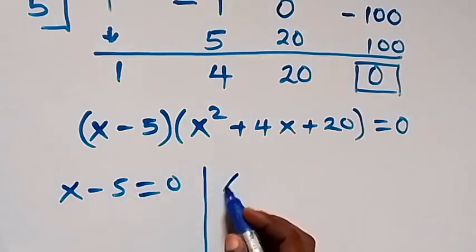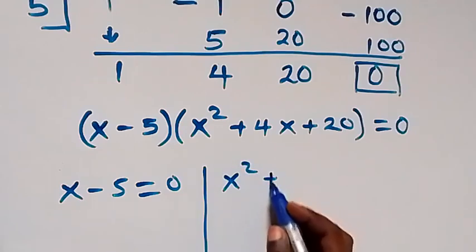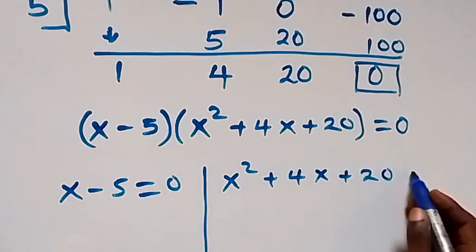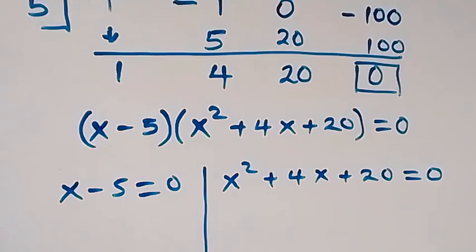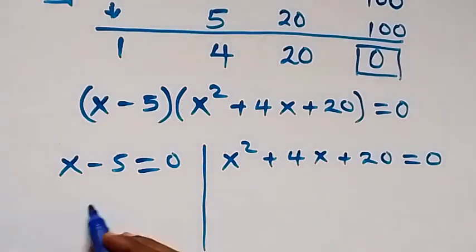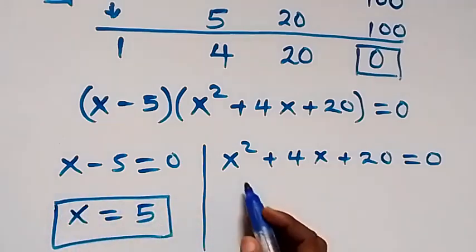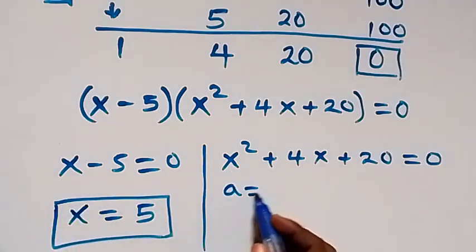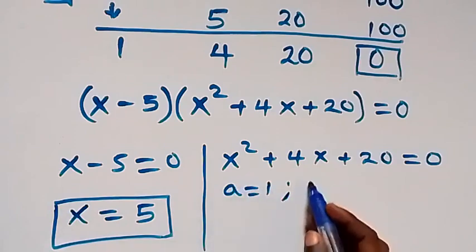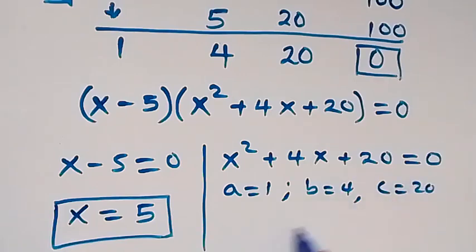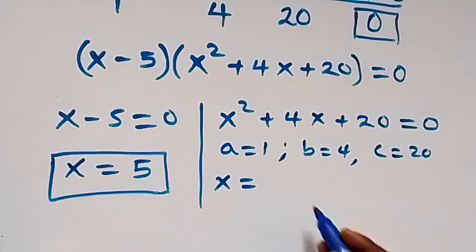From here, it implies we have x minus 5 equals 0, and also x squared plus 4x plus 20 equals 0. From the first equation, we have x equals 5, which is a real solution. Now when we solve the quadratic, a is 1 (the coefficient of x squared), b is 4, and c is 20.